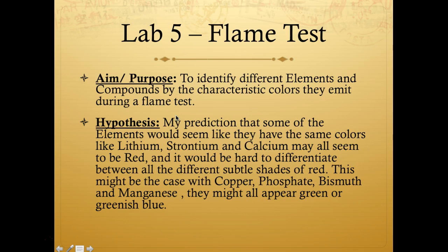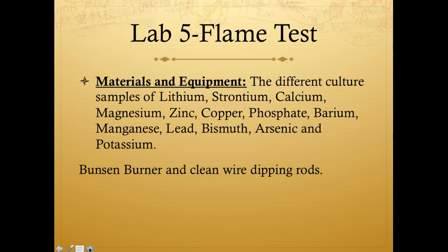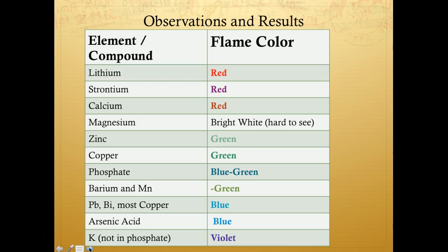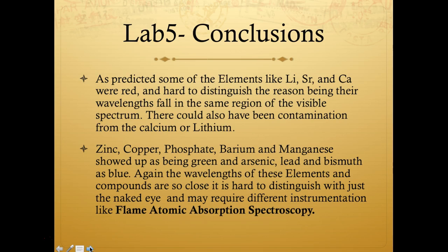The hypothesis here is that it would be hard to distinguish between elements that have almost the same type of color but in different shades — for example, different shades of red or different shades of green. Those subtle differences might be hard to tell apart. For the lab report, you'll write the materials, equipment, procedure, and then observations and results, which you can write as separate sections or combine into one.